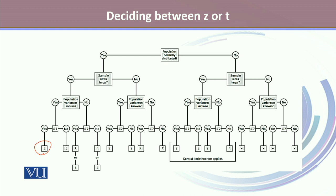Secondly, if the population is normally distributed, sample size is large, and population variances are known but not equal, then we again use Z as the reliability factor.